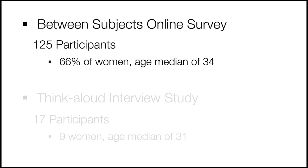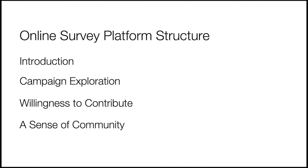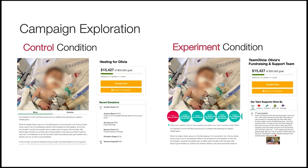In the online survey, we first asked participants to imagine one of their best friends shared a link to a GoFundMe campaign on their Facebook news feed to ask for support. Participants were then presented with either a control condition — the existing crowdfunding interface — or an experimental condition, the Community Journey interface. Both interfaces were fully functional, so participants could explore Olivia's campaign just like a regular crowdfunding campaign.